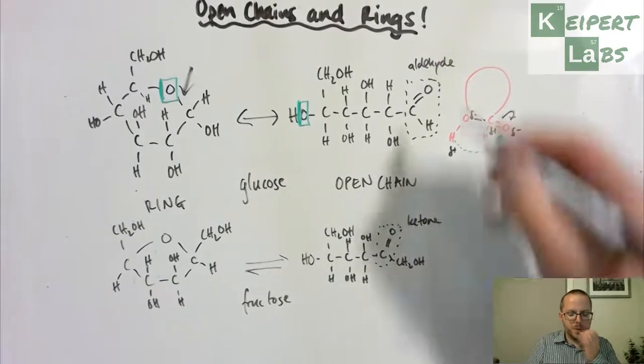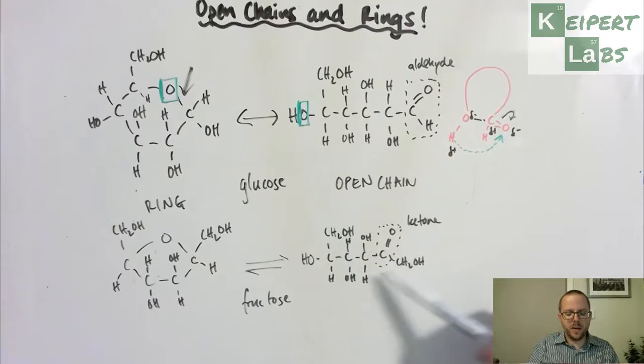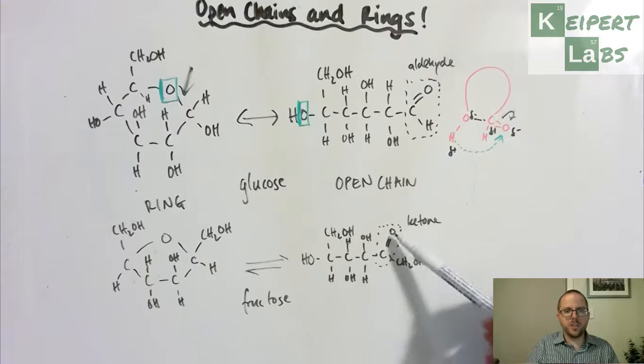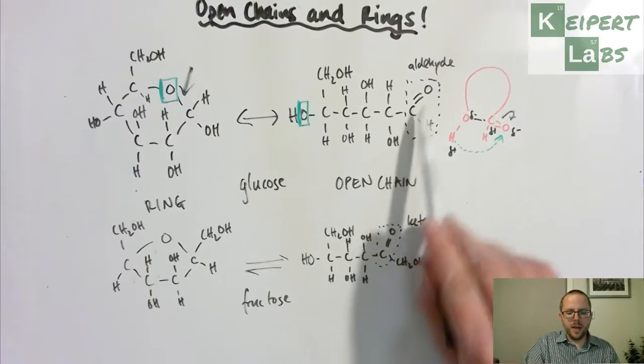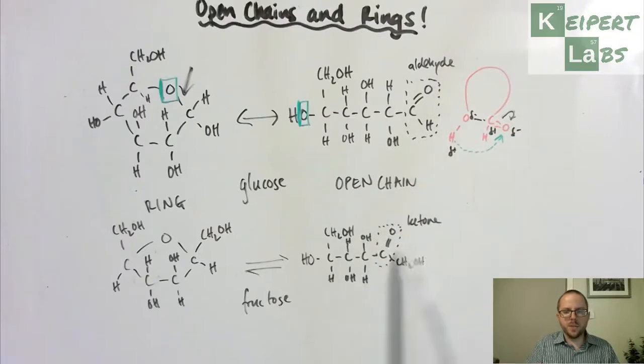Now, you don't need to be able to identify the names there but you do need to recognise what these things are. So they contain a carbon-oxygen double bond - here it's on the end carbon which is why it's called an aldehyde, here it's in between two carbons which is why it's called a ketone.